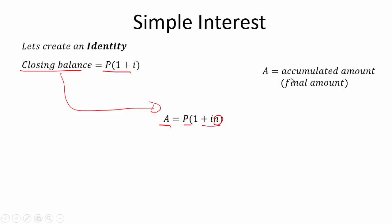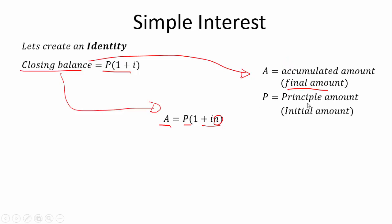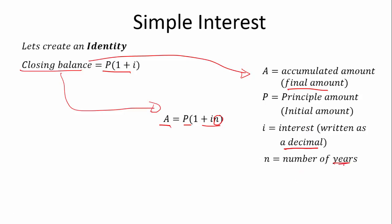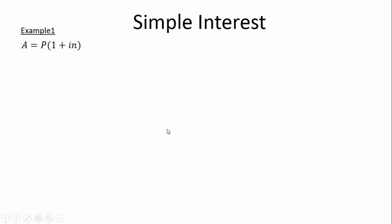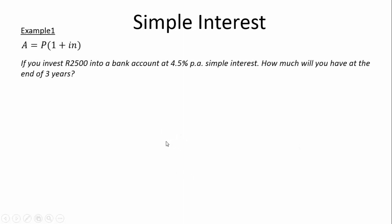A is our accumulated amount — our final amount, also called the closing balance. P is your principal amount, your initial value. i is your interest rate written as a decimal — very important that it's a decimal. N is the number of years, because the interest will be per annum. So A equals P(1 + i·N). You must remember this — this is your identity.